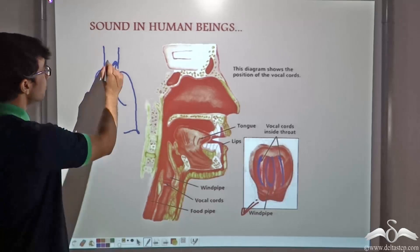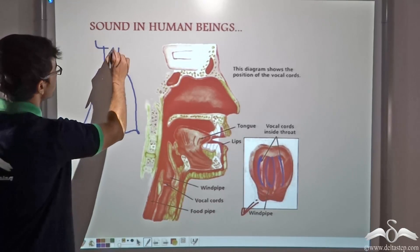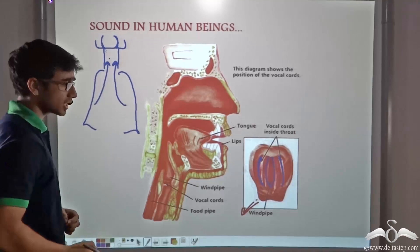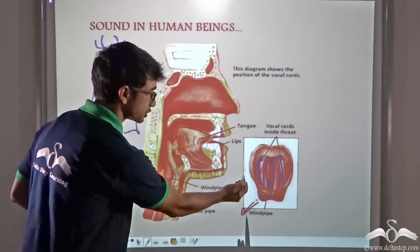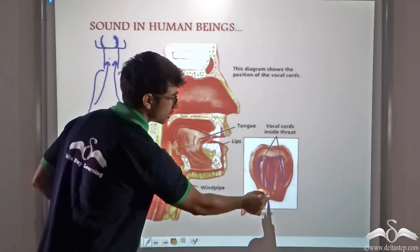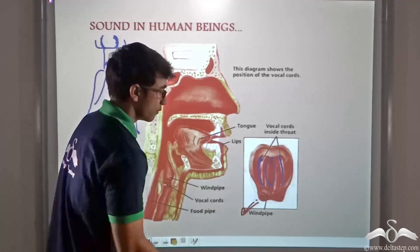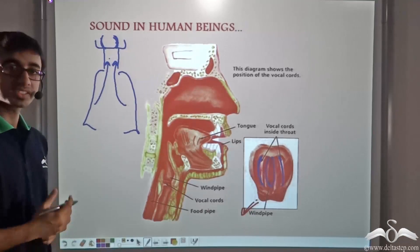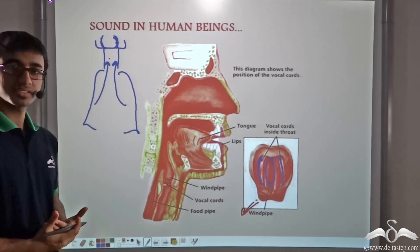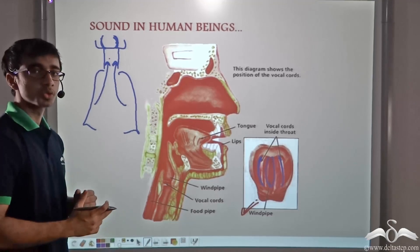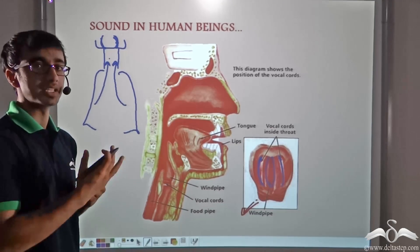And from the windpipe, the air passes into the voice box. Now when air is passing through the voice box, it sets the vocal cords in vibration. The vocal cords start vibrating while air is passing through this slit. So the moment the vocal cords start vibrating, what happens? Sound is produced and this is exactly how we human beings are able to speak.